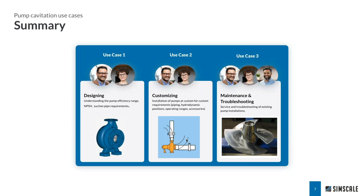Use case three is maintenance and troubleshooting. When pumps have been running for years and you encounter cavitation or noise issues, simulation can help identify the cause. You can take the existing setup — pump, piping, impeller roughness — and run a simulation to find out why these effects are happening and use those insights to prevent adverse effects on the pump. This is the overall summary of the cavitation model within SimScale and how CFD can help predict or avoid cavitation.